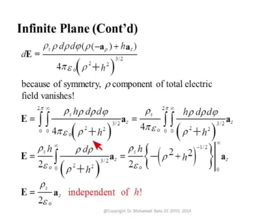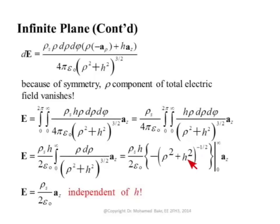The integral over Ru: we have Ru in the numerator, which is the derivative of Ru² inside that term. The integrand has power minus 3/2, so adding 1 gives power minus 1/2, and dividing by minus 1/2 cancels the 2. We end up with this bracket raised to power minus 1/2 with a negative sign. Substituting Ru equal to infinity gives 0 (negative power), and substituting Ru equal to 0 gives H² to power minus 1/2, which is 1 over H. With the negative sign from the lower limit, we get 1 over H.